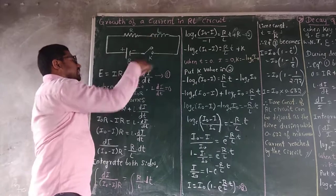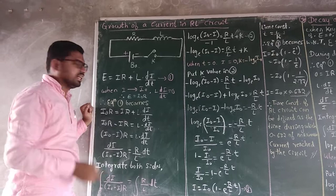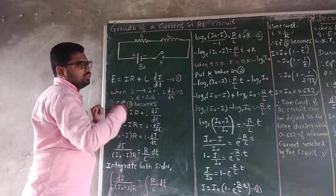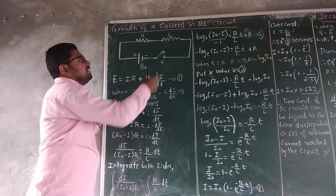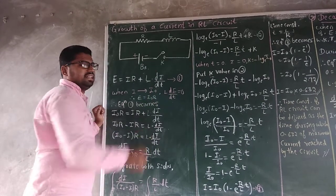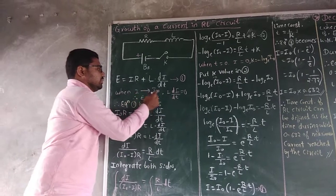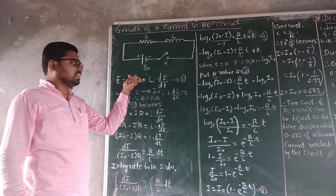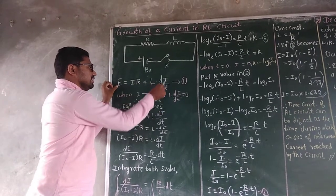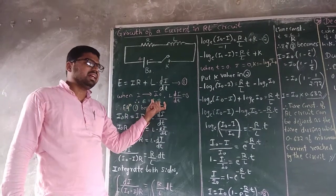If current flows continuously through the circuit, it reaches a maximum point where I becomes I₀. At maximum current, there is no change in inductance, so L(dI/dt) = 0. Substituting I = I₀ and L(dI/dt) = 0 into equation 1 gives E = I₀R.